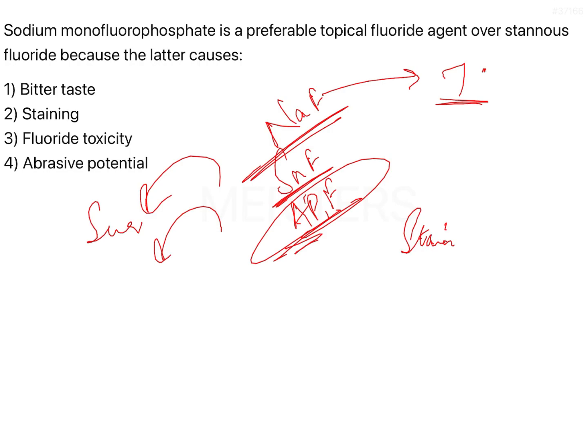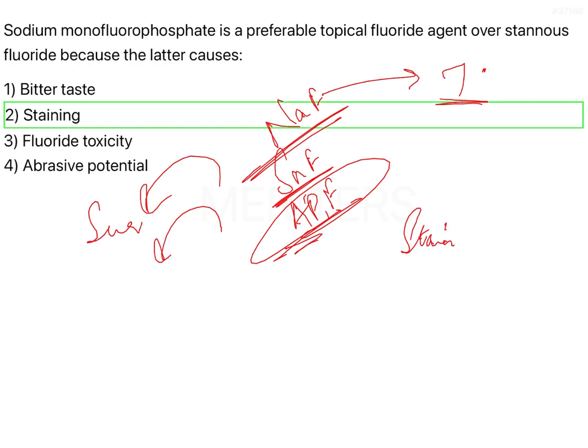Coming to the answer: the answer will be staining, because of the presence of tin. The second greatest disadvantage of stannous fluoride is that it is going to cause a lot of irritation, because tin as such is a very erosive and irritating metal. That is why sodium monofluorophosphate is preferred over stannous fluoride.